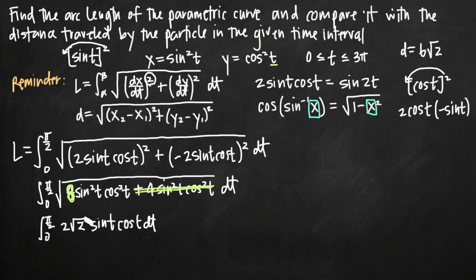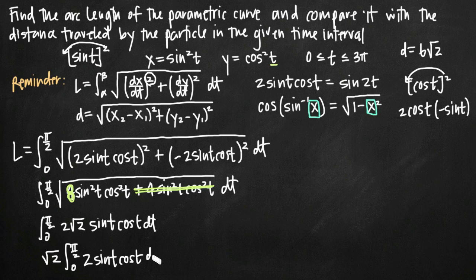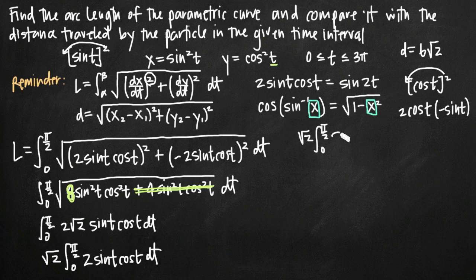We pull root 2 out in front of the integral, leaving 2 sine t cosine t inside. We recognize 2 sine t cosine t as the double angle formula equal to sine of 2t. So the integral becomes root 2 times the integral from 0 to pi over 2 of sine of 2t dt.